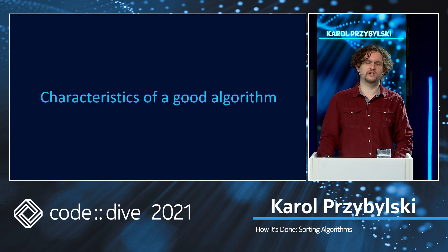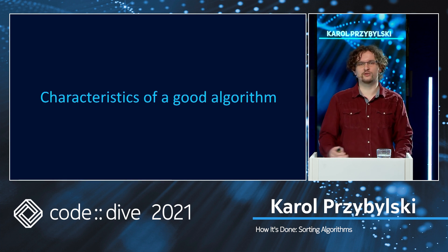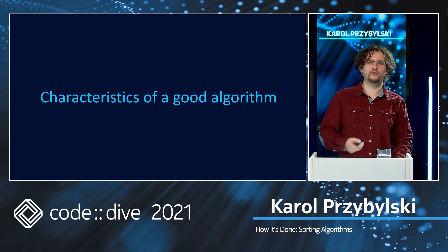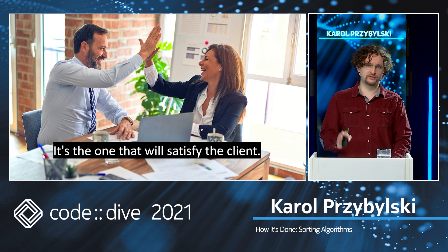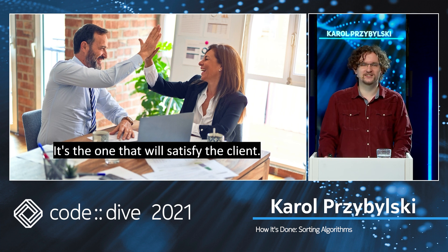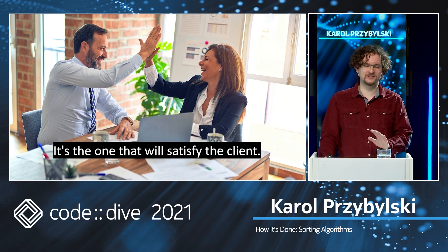Let's talk about the characteristics of a good algorithm. When I was preparing for this talk, I actually thought there would be some community-approved checklist for how a good computer program should look like. But nothing like this exists — it's very subjective and depending on the use case. The first characteristic is that we need to remember to satisfy the business logic. What matters is that the client is happy. So it's important to satisfy business logic and to do what the client wants. That's the most important.